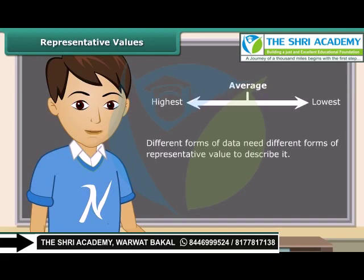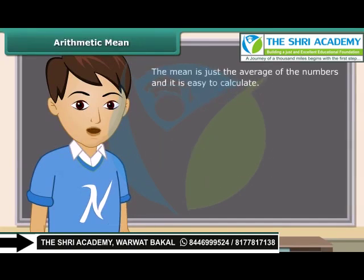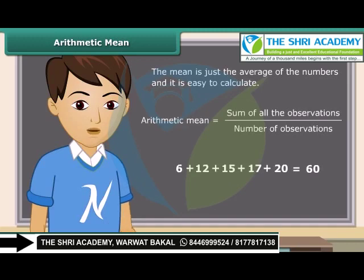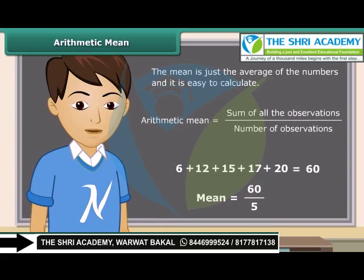Different forms of data need different forms of representative value to describe it. One of these representative values is the arithmetic mean. The mean is just the average of the numbers and it's easy to calculate. Mean is equal to the sum of all the observations divided by the number of observations. Let us calculate the mean of these numbers. The sum of these numbers is 60. There are total 5 numbers. So the mean is equal to 60 divided by 5, which equals 12. Therefore, the mean of the above numbers is 12.